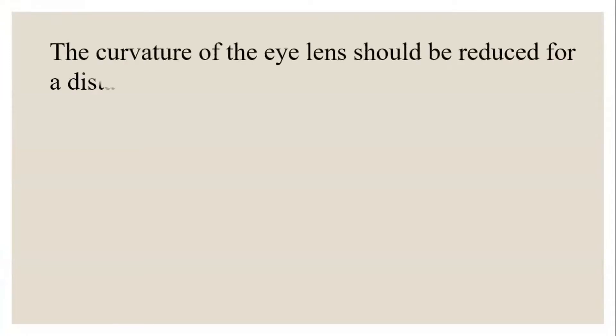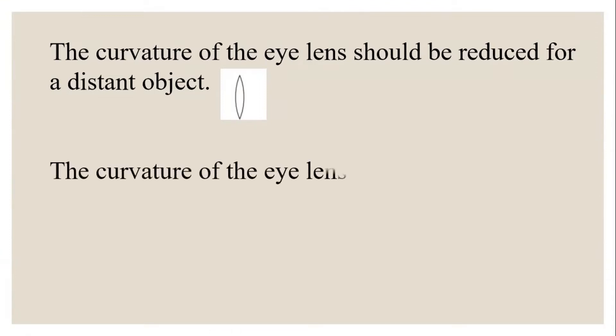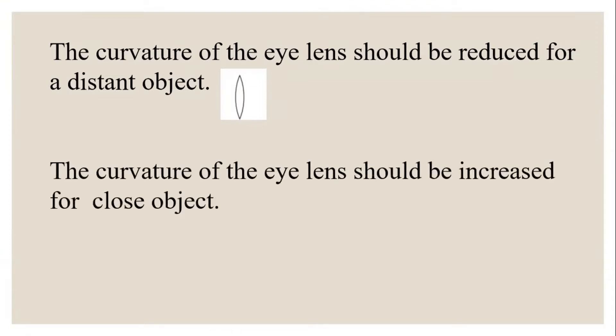The curvature of the eye lens should be reduced for a distant object. Normally when we are looking at a distant object, our eye lens curvature is reducing, as shown in the picture. The curvature of the eye lens should be increased for close objects when we are observing a close object.